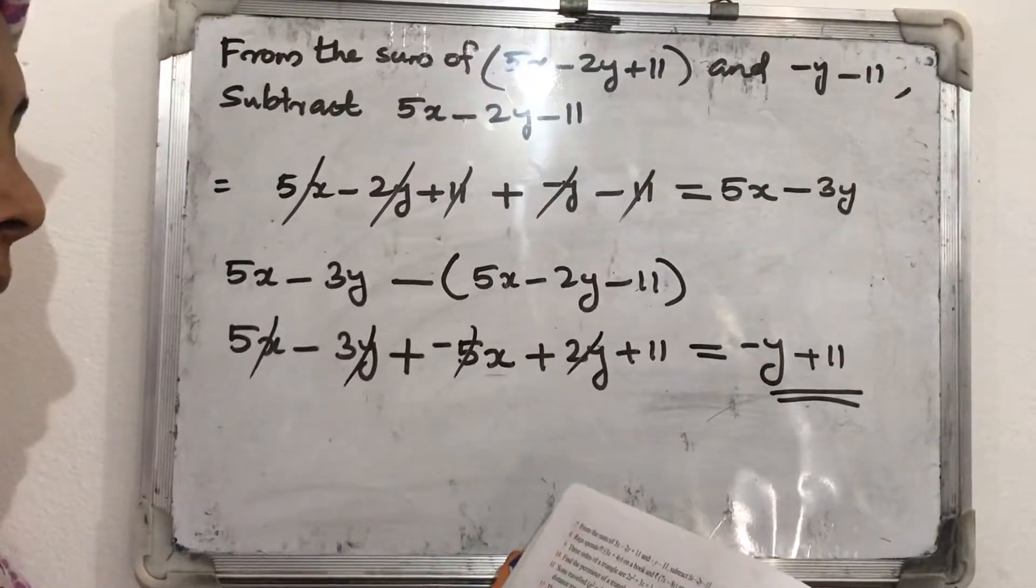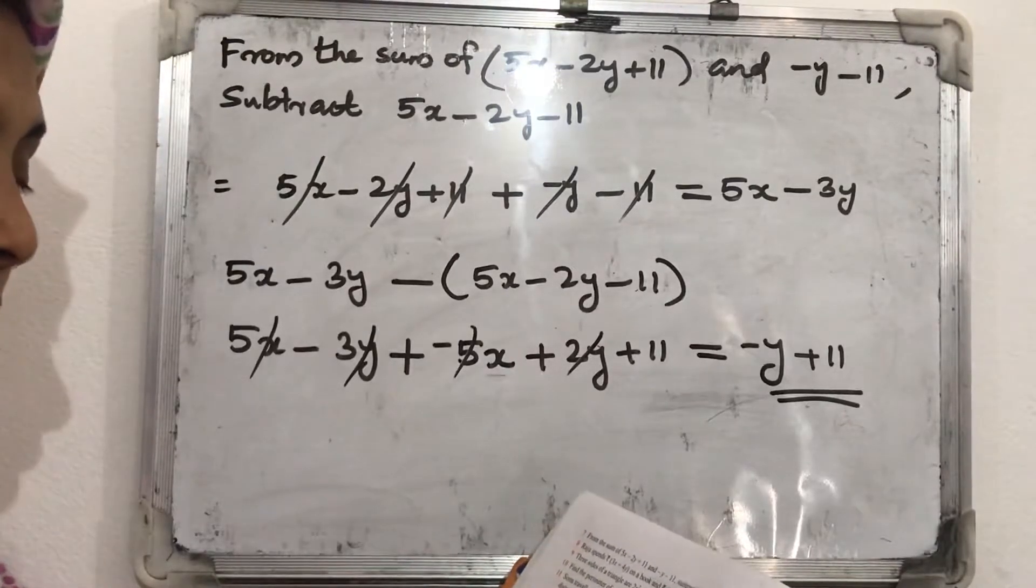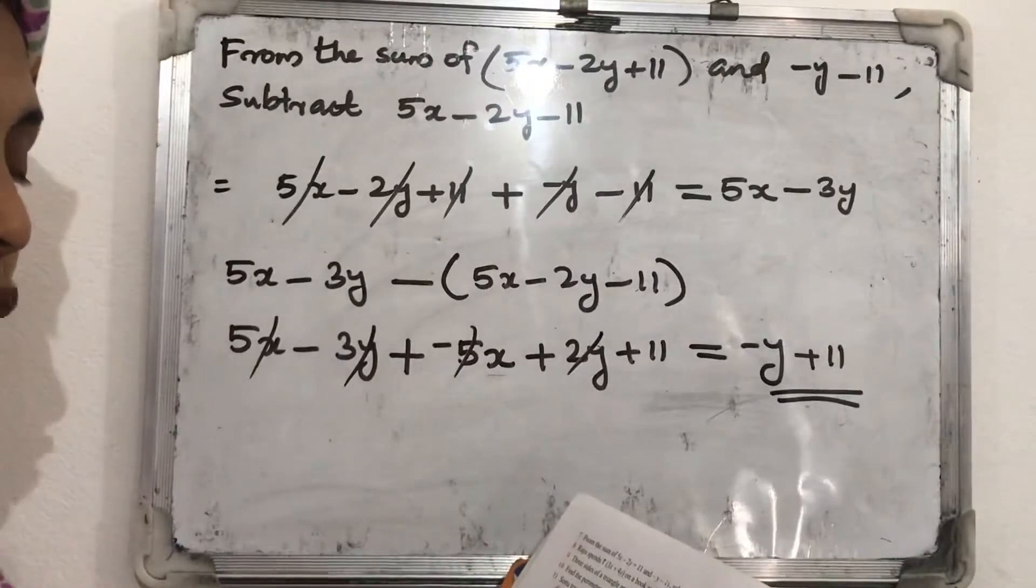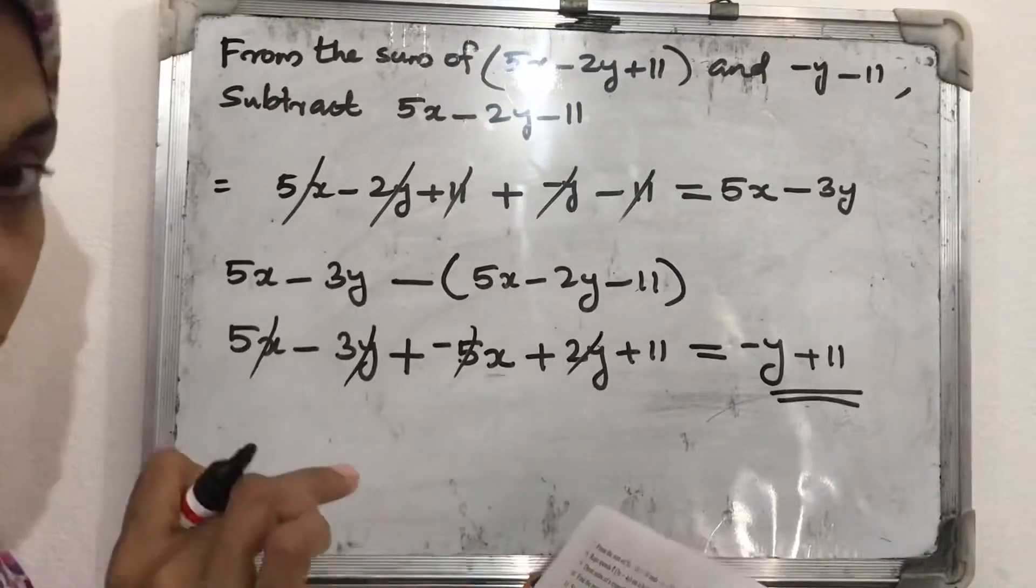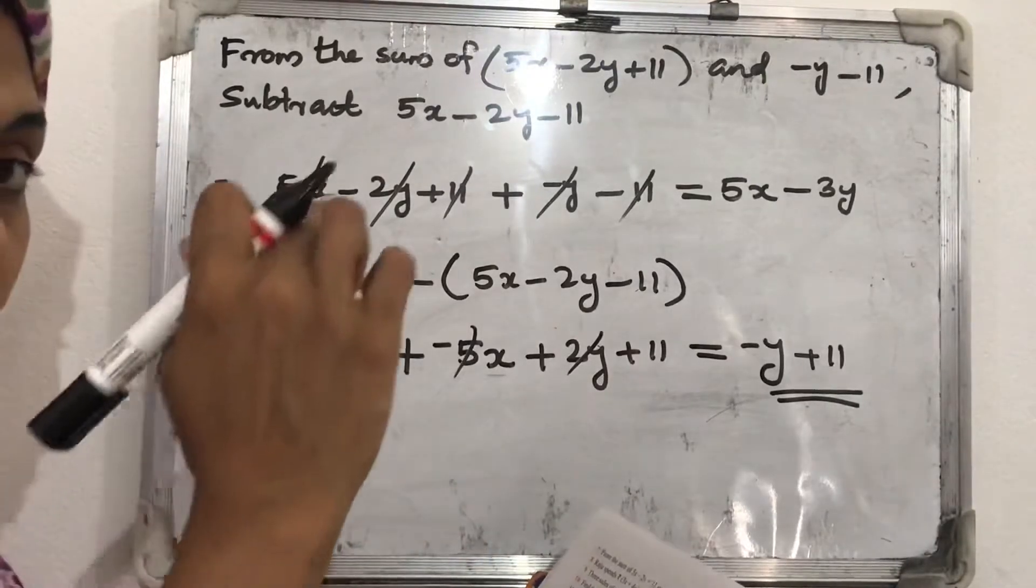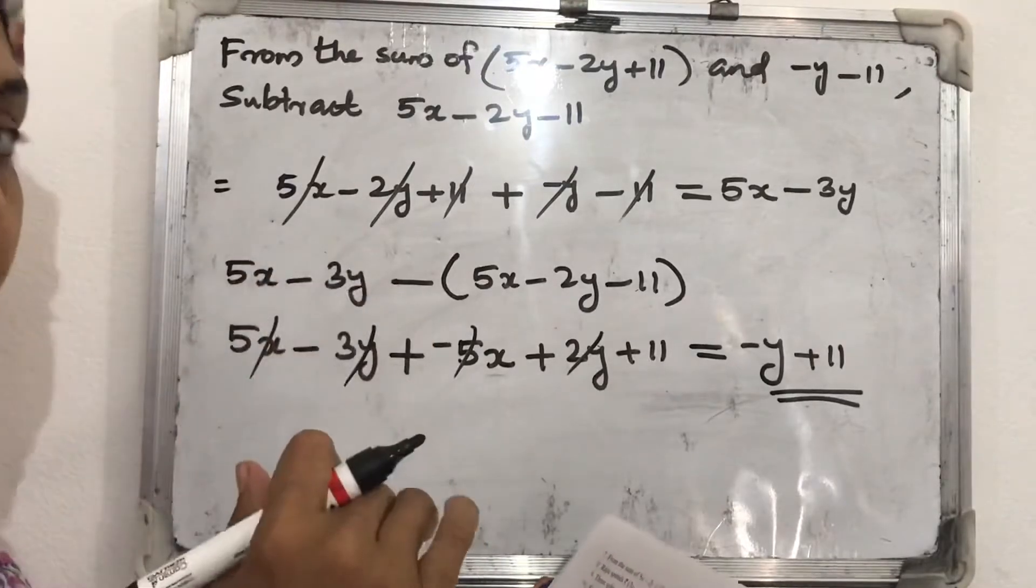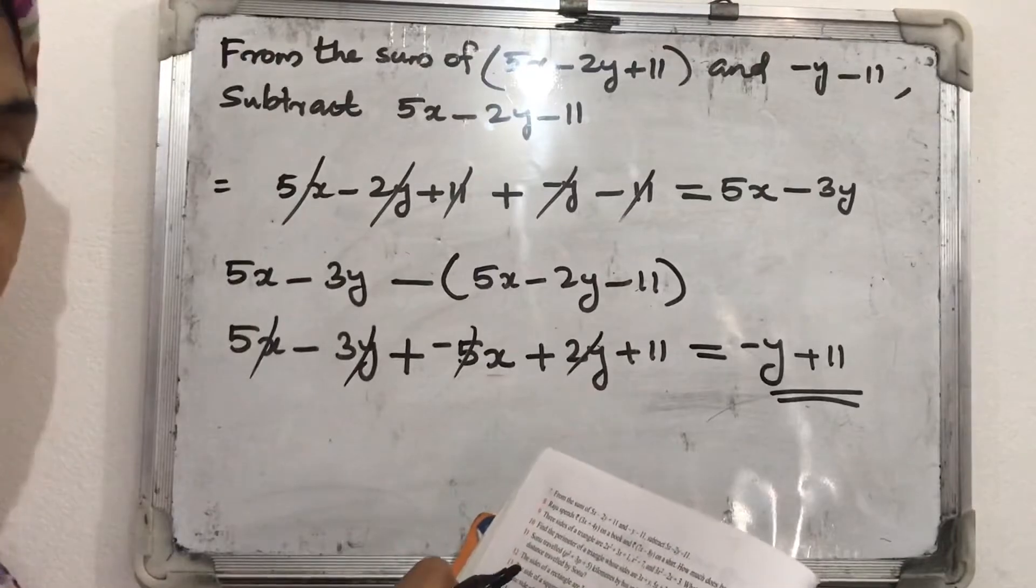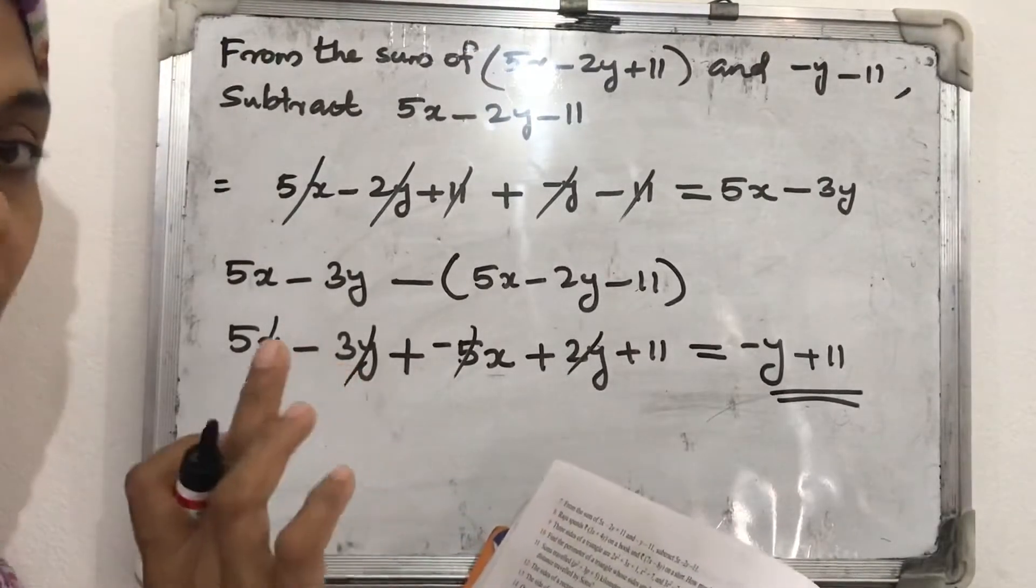Next question. The sides of a rectangle are 3x plus y and 7x plus 2y. Two sides are given. Find its perimeter. So for finding the perimeter we want to add those four sides. You know rectangles, opposite sides will be equal. So we want to add these two: 3x plus y and 7x plus 2y. Add how many times? Two times.